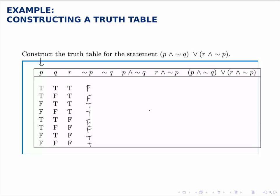For not Q, I do the same thing except now looking at the Q column. So true becomes false and false becomes true. This column looks like that.